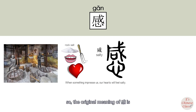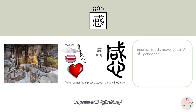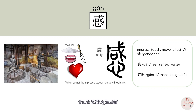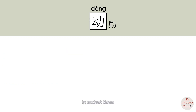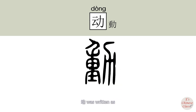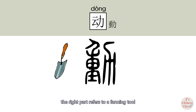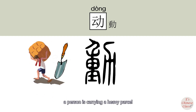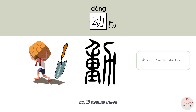So the original meaning of 感 relates to a deep feeling. In ancient times, 动 was written differently as well. The right part refers to a farming tool, and the left part shows a person carrying a heavy load. So 动 means to move.